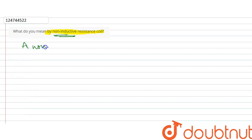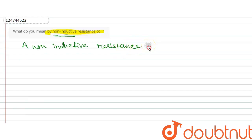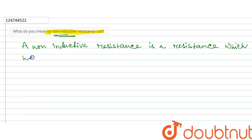If you don't miss any inductors there, which doesn't have a magnetic step. Similarly, this is a non-inductive resistance. Non-inductive resistance — we can write: non-inductive resistance is a resistance which has no inductance.